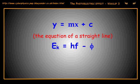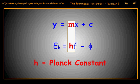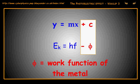You can therefore see that H is the gradient of the graph. This will be the same for every metal because the Planck constant is a constant. The intercept will be phi. This will be a negative value in each case.